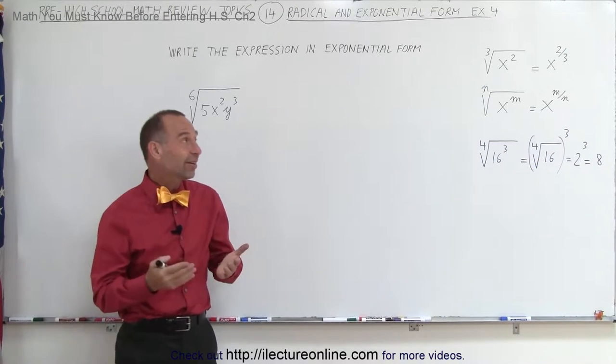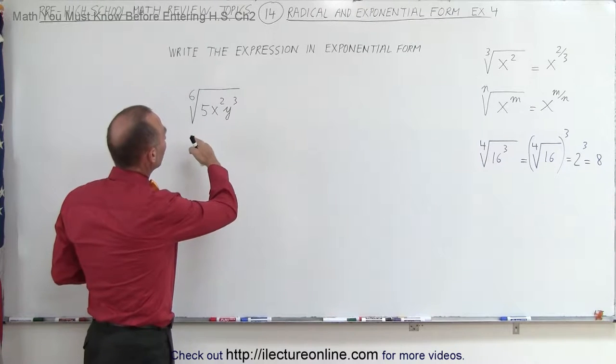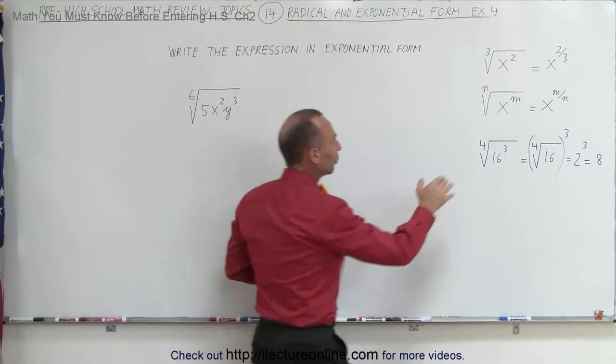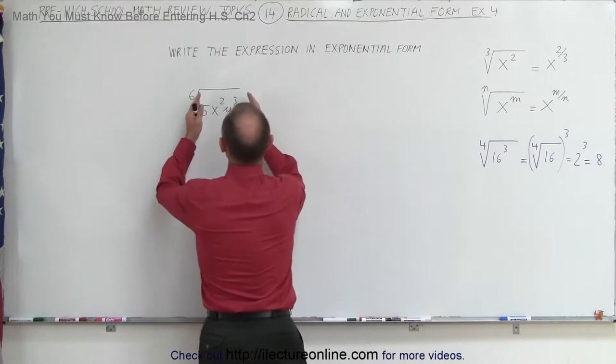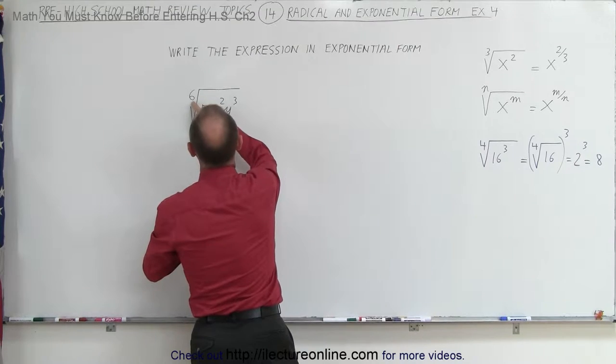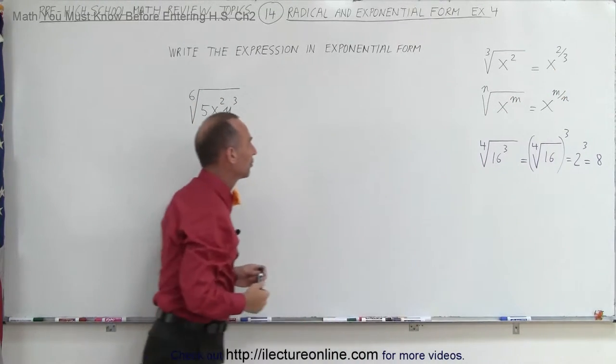Welcome to ElectronLine. Now in this example, again, we're trying to take this expression and turn it into an exponential form. To do that, again, we follow the rules here where we have the quantity inside the radical sign and then we have the root up there. Remember, the root becomes a denominator in the exponent.